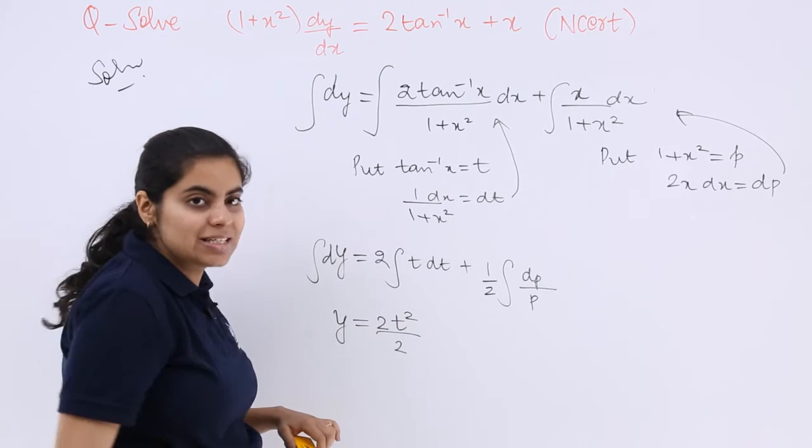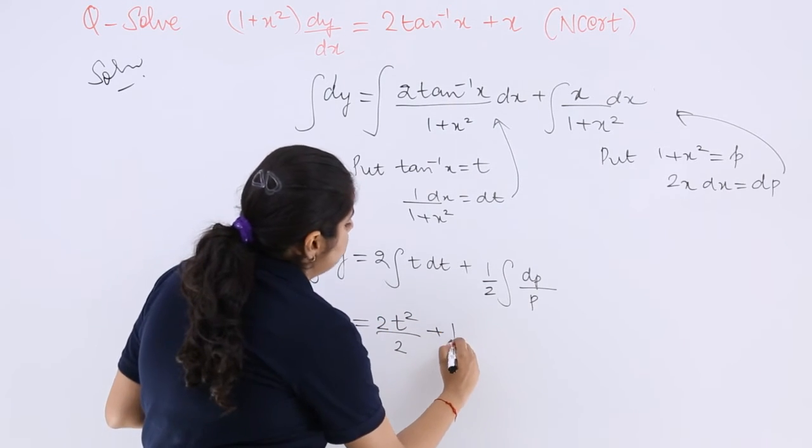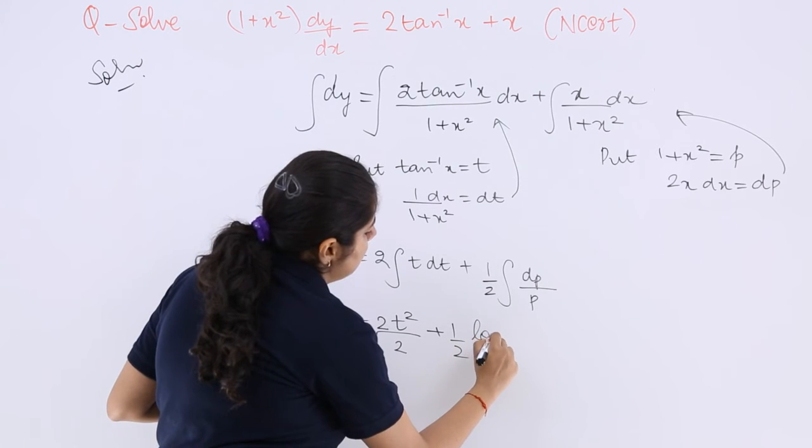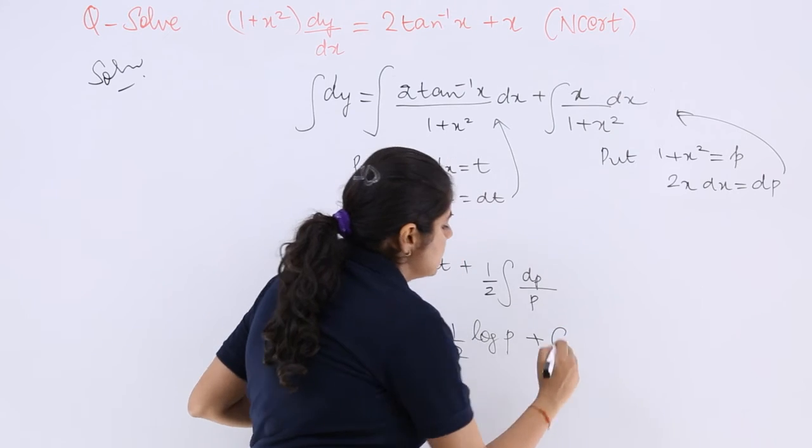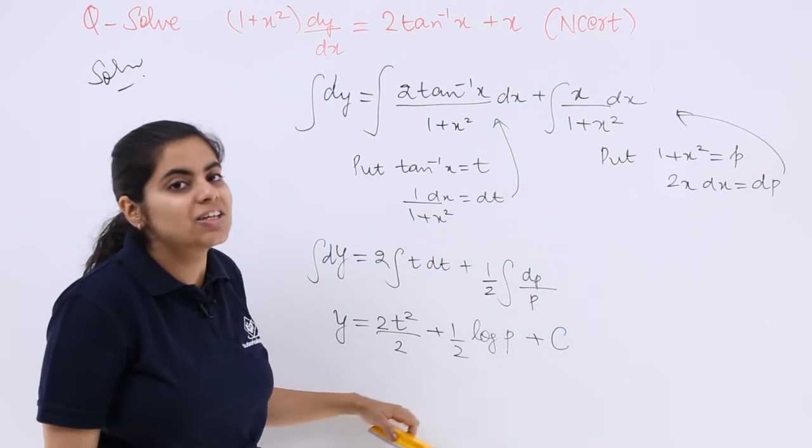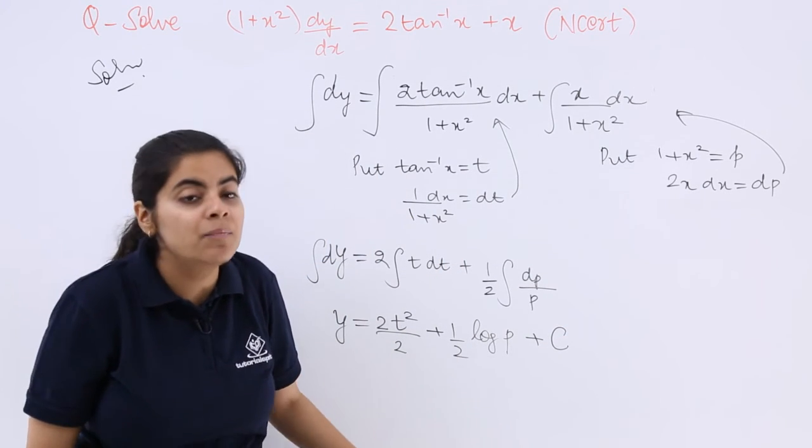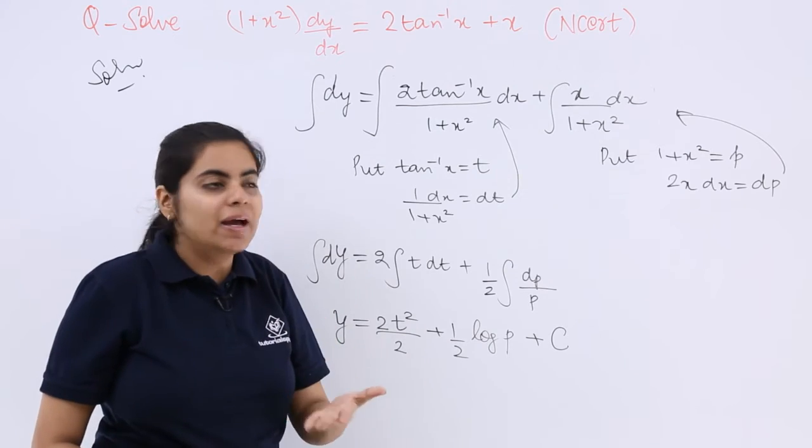Integration of t is t²/2 plus (1/2)∫(1/p)dp is log p plus C which is the constant of integration, but I cannot leave my answer here because I am unaware of what is p, what is t, until and unless I put the values.